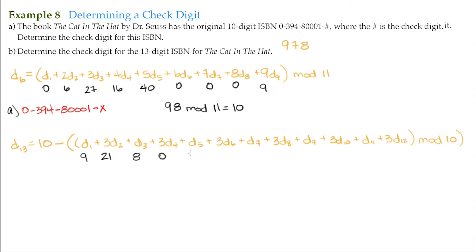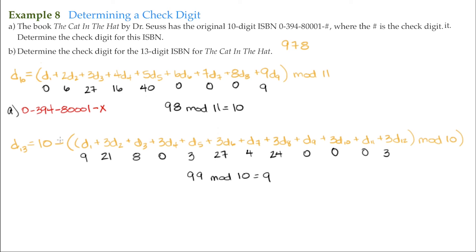Continuing with the digits: 3, then 3 times 9 is 27, then 4, then 3 times 8 is 24, then zeros — 0, 0, 0, 0 — and finally 1 with three times 1 being 3. Adding all of this up modulo 10 gives 99. Since 99 mod 10 is 9 (the last digit), we then take 10 minus 9, which equals 1. So the check digit is 1.